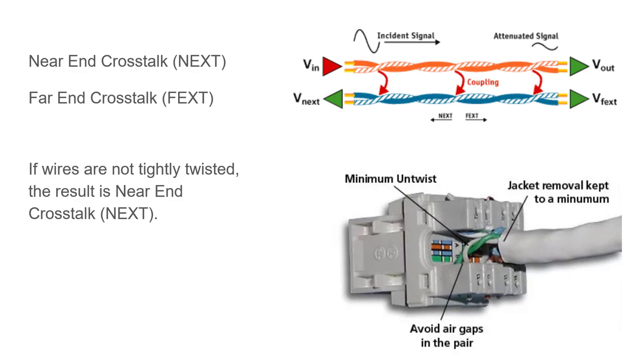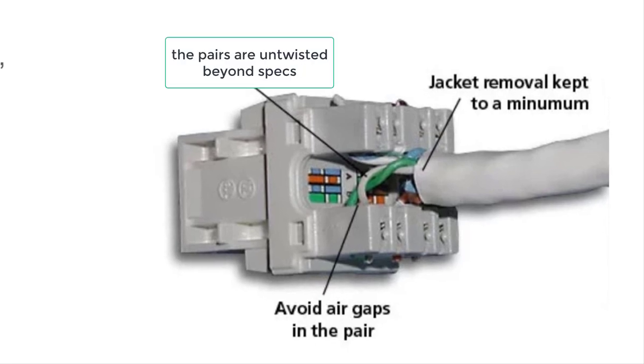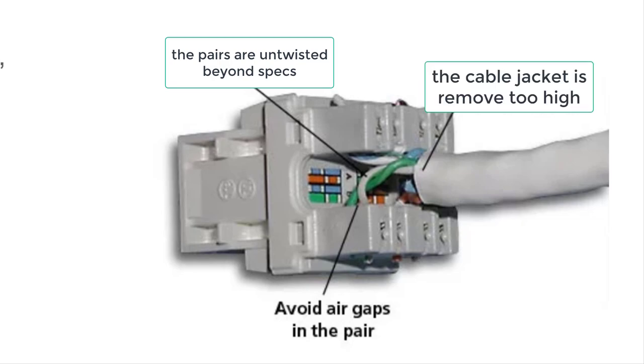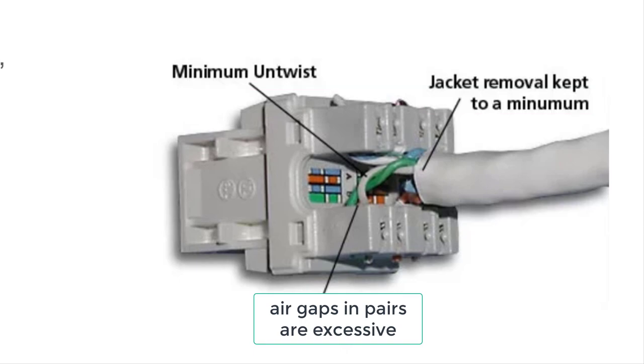Once we get our signal on the media, now we have all kinds of new problems. If our connector, like the one shown here, has too many wires untwisted. Or the jacket is removed too far back on the neck. Or we've got air gaps between the pairs. All of that begins to create problems.